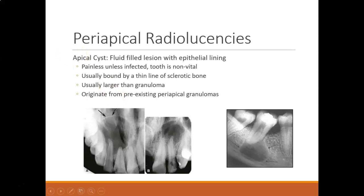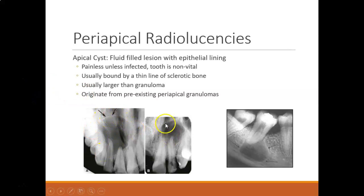Apical cysts look a little bit different — they are fluid-filled lesions with an epithelial lining. They're painless unless they become infected. The tooth around the cyst is often non-vital, so root canal therapy is usually needed. They are usually bounded by a thin line of sclerotic bone, which you can see as thin linings of bone around the cyst. They're usually larger than a granuloma and originate from pre-existing periapical granulomas — a small granuloma may grow into a cyst.